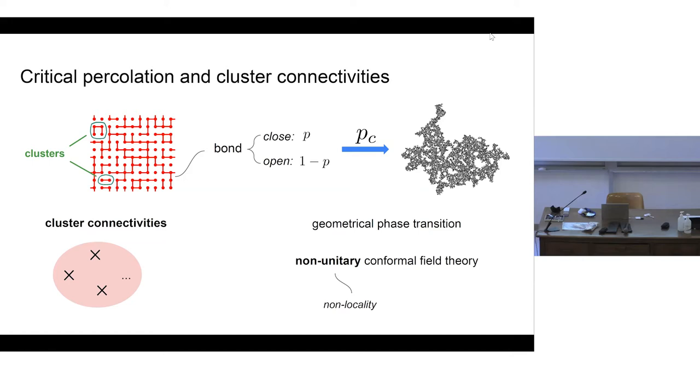As we know, continuous phase transitions in the scaling limit are given by conformal field theories, but in this case for the geometrical phase transition we are studying, this is described by non-unitary conformal field theories, which are poorly understood. These non-unitarity essentially arise from the fact that we are trying to describe geometrical extended degrees of freedom, and one of the most fundamental physical observables are the cluster connectivities — quantities that describe the probability of a number of lattice points belonging to the same cluster. We would like to use CFT techniques to compute these quantities in the scaling limit.